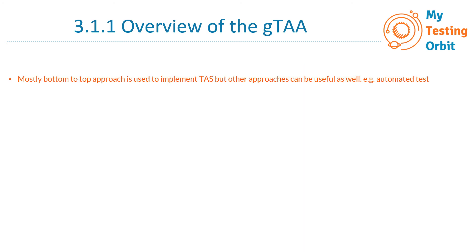Mostly a bottom-to-top approach is used to implement a test automation solution, but other approaches can be used as well, for example test generation for manual tests. It can be top to bottom as well. It all depends on what kind of solution we are automating and what works well for it, because sometimes we have a toolset and try to accommodate everything around it, which might not work well for that specific solution. We always need to find the approach that works best for our test automation solution.